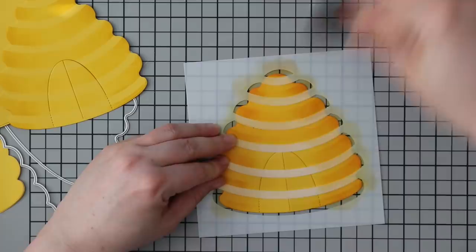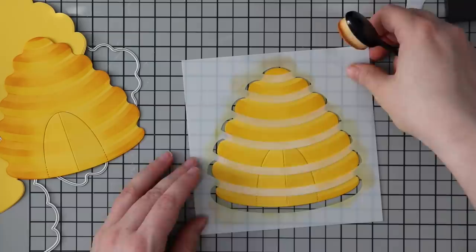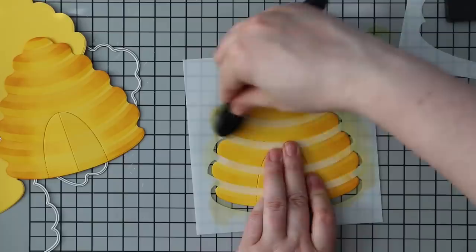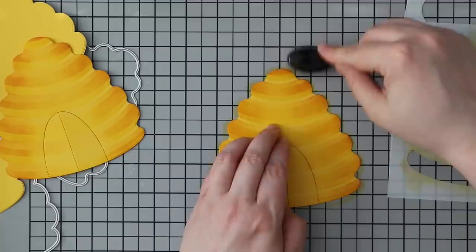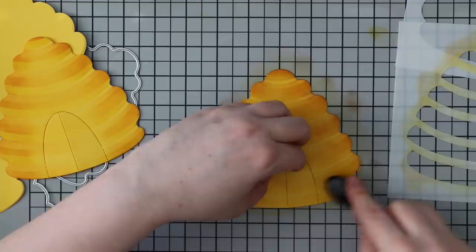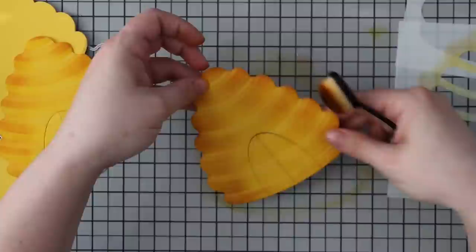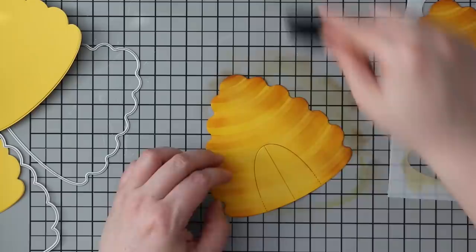I'm blending on some distress inks with a Picket Fence blender brush. I started with my lightest color, which was Mustard Seed, and it gave that bit of definition. Then I went in with Wild Honey in the second stencil. You can see how it starts to add depth.